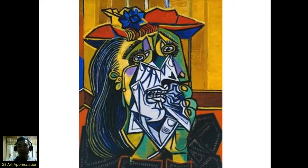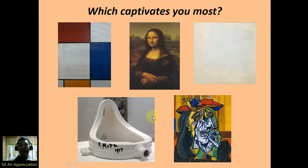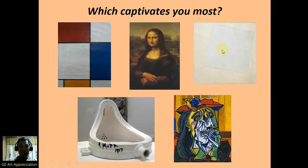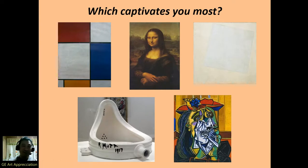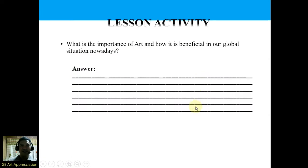How about this painting — this is a painting by Picasso, The Weeping Woman. Is this painting wow or yak? Just answer it by yourself. So which captivates you most? Among all these paintings, which captivates you most — is it the Mondrian Composition of Red, Yellow, and Blue, or the Mona Lisa by Leonardo da Vinci, or Malevich's White on White, or Duchamp's The Fountain, or Picasso's The Weeping Woman? Saan dyan yung nagugustuhan mo? Try to answer for your activity.